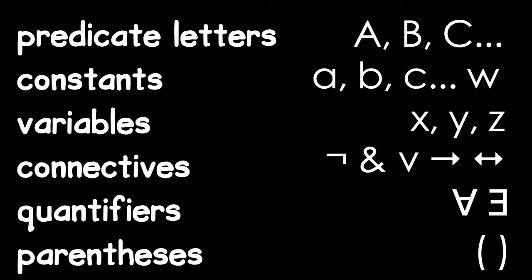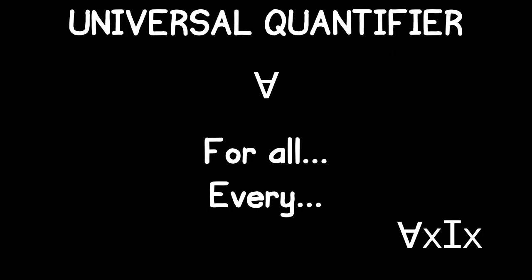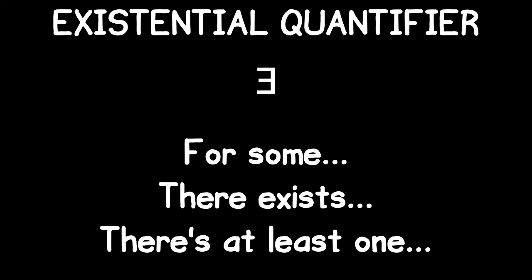In addition, QL will have the connectives and parentheses that we already know from SL. And it will also have two new logical operators called quantifiers. The upside-down A is called the universal quantifier. It translates expressions like all and every. That's why we used it earlier when translating everyone likes ice cream. The backwards E is called the existential quantifier. It translates English expressions like some, there exists, and at least one. We'll get more detail into how quantifiers work in the next video.